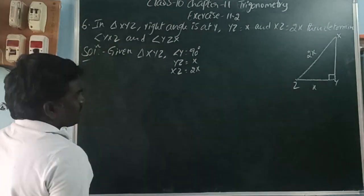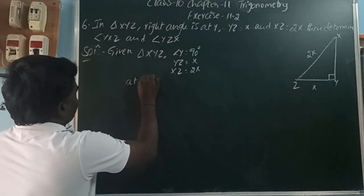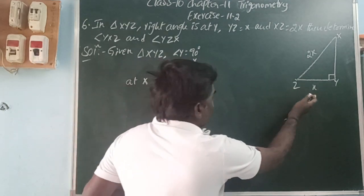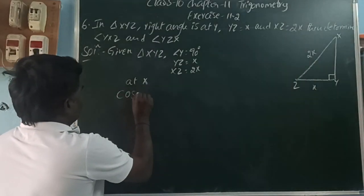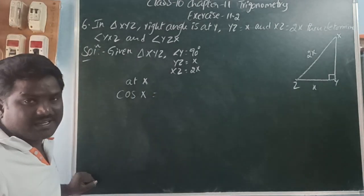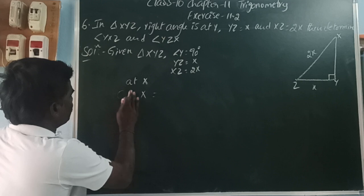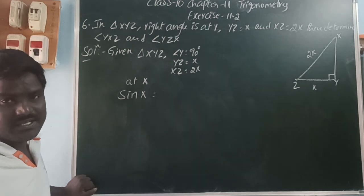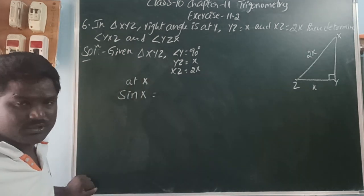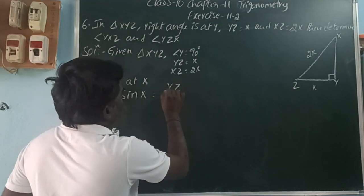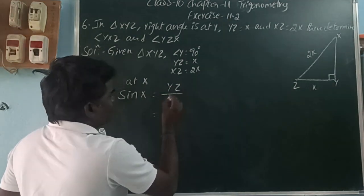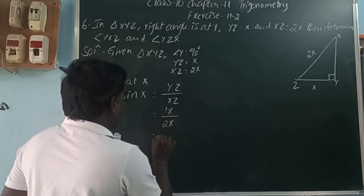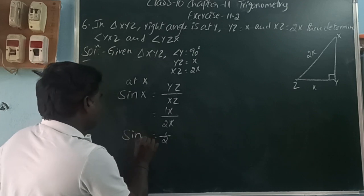At angle X, we can take the sin ratio, which is opposite to hypotenuse. So sin X equals YZ by XZ. That is X by 2X. The X cancels, giving 1 by 2. So sin X is equal to 1 by 2.